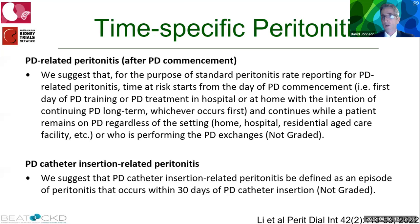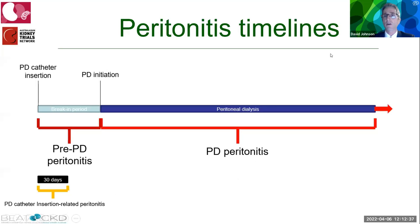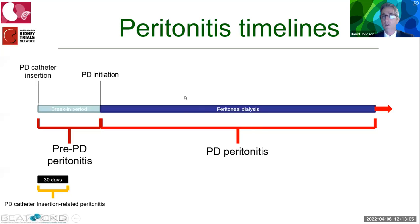PD catheter-insertion-related peritonitis occurs within the first 30 days after catheter insertion whether or not the patient has commenced PD. Schematically: any peritonitis between catheter insertion and PD initiation is pre-PD peritonitis — reported separately and not counted in standard peritonitis rates. PD-related peritonitis follows PD commencement. Catheter-insertion-related peritonitis sits within that first 30-day window regardless of whether PD has started.